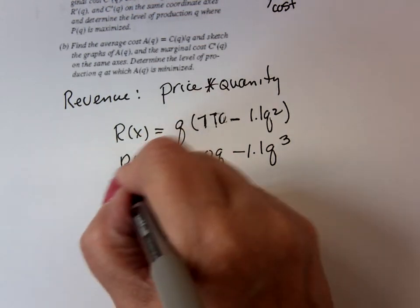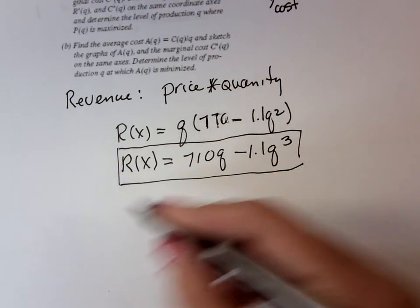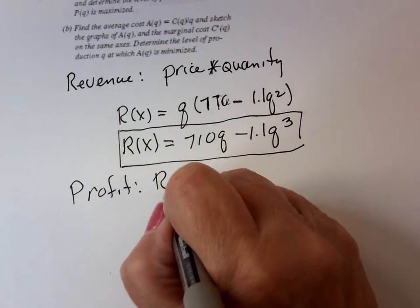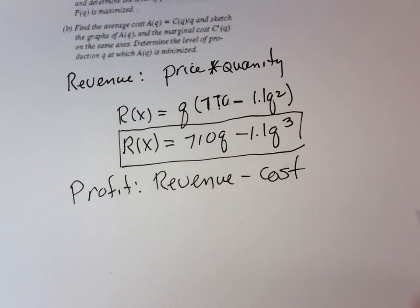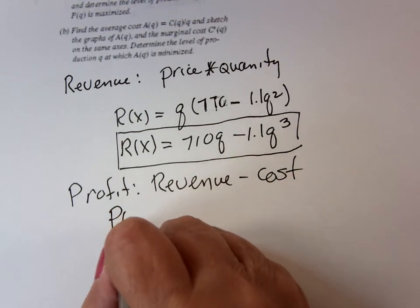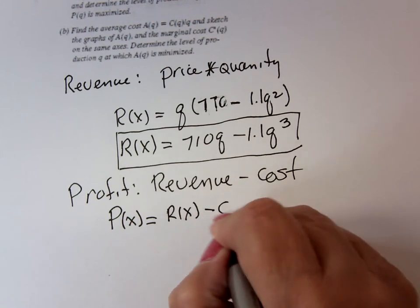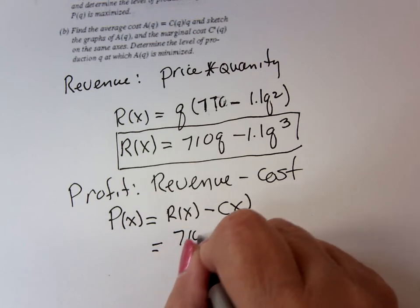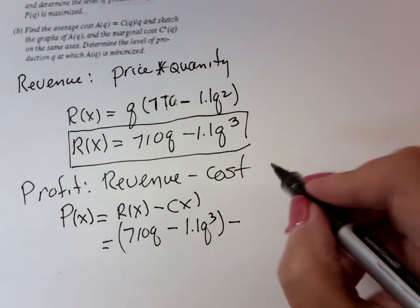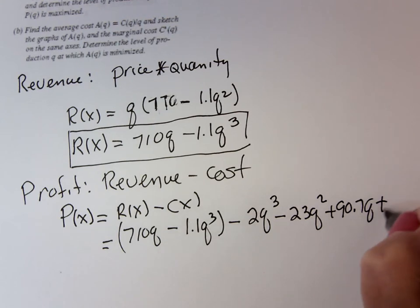And the profit function, so this is revenue. And the profit function P(Q), so this is revenue. Now I need to go after profit. So what's profit? Revenue minus cost. Revenue minus cost. Do I have the revenue function? Yes. So profit is going to be revenue minus cost, which is 710Q minus 1.1Q³ minus cost, which is 2Q³ minus 23Q² plus 90.7Q plus 151.